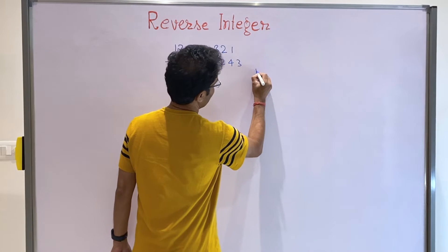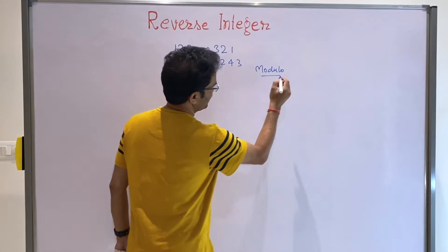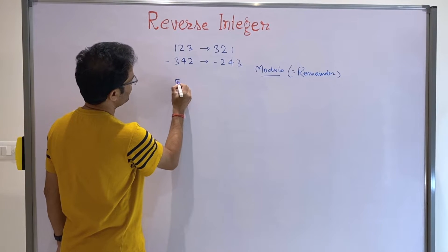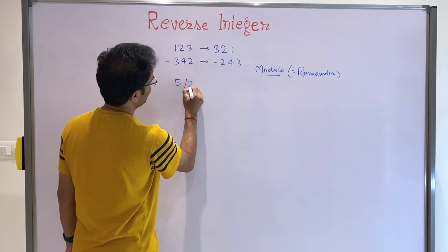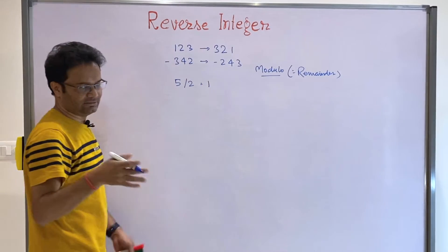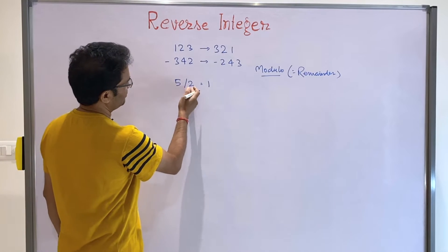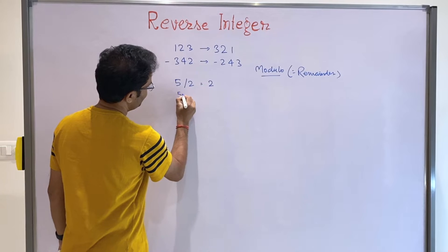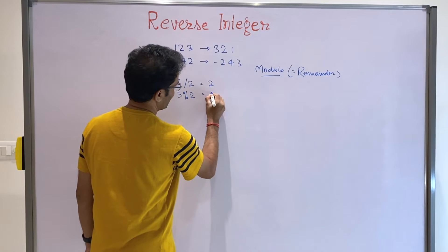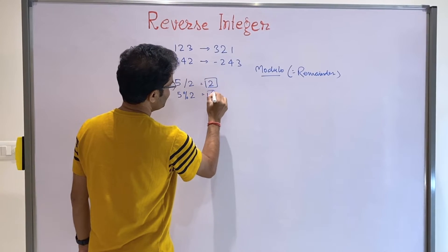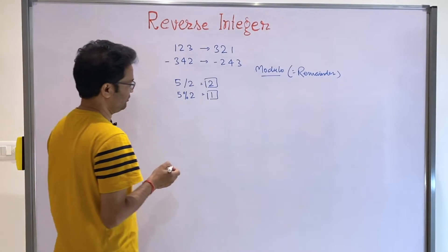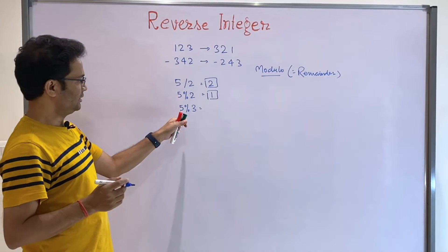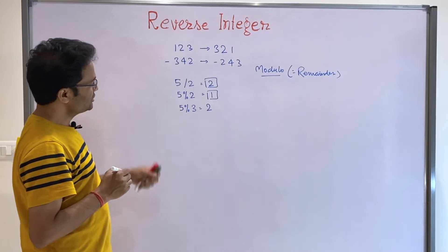Before that, you should know the concept in Java or any other language — what is the modulo, or you can also say what is the remainder. Suppose if you divide 5 by 2, you will get the answer 2 as an integer, because 5 divided by 2 is 2.5 and the integer part is 2. But if you take the modulus of 5 by 2, it will become 1. Modulus means after division, what is remaining — that is the result. For better understanding, 5 modulus 3: if you divide 5 by 3, the remainder is 2. This is how modulus works.